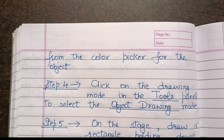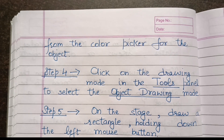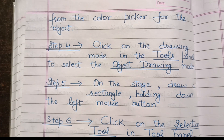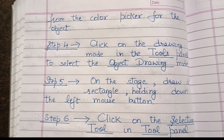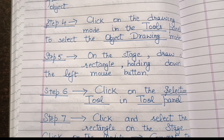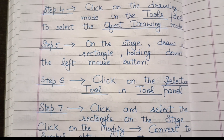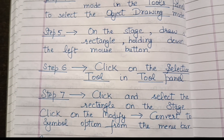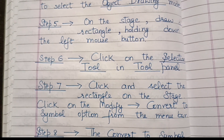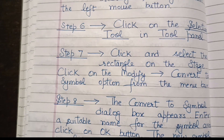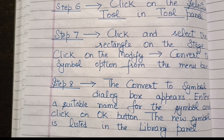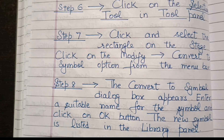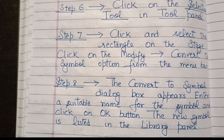Step 5: On the stage, draw a rectangle holding down the left mouse button. Step 6: Click on the Selection tool in the Tools panel. Step 7: Click and select the rectangle on the stage, then click on Modify and choose Convert to Symbol from the menu bar. Step 8: The Convert to Symbol dialog box appears — enter a suitable name for the symbol and click OK. The new symbol is listed in the Library panel.